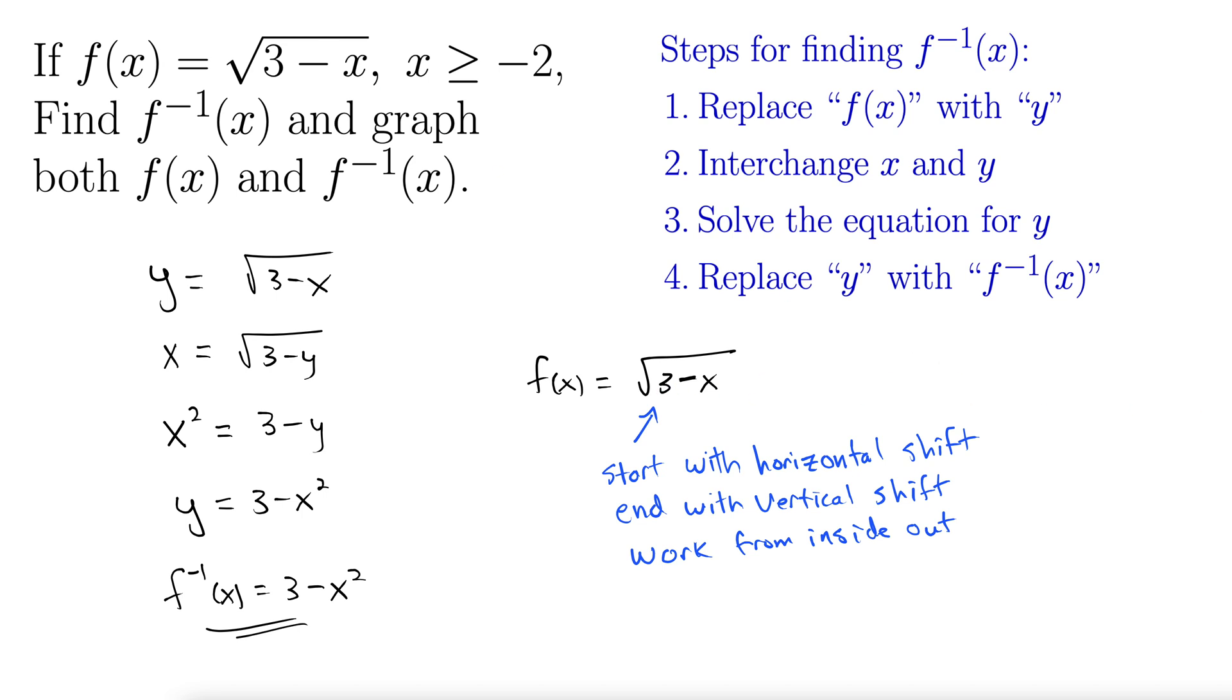Here I'm actually going to do this in Desmos eventually, but I just want to make sure we could graph this by hand if needed. You start with your base function, square root of x. This is going to move it 3 to the left because we're adding 3.